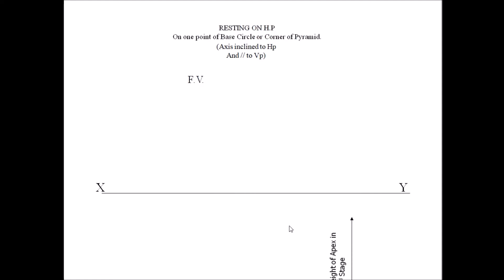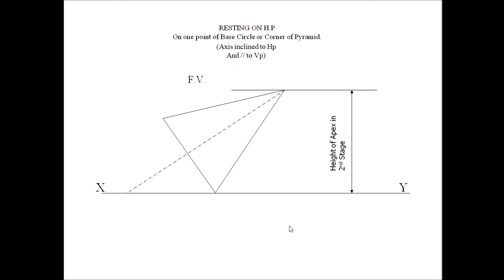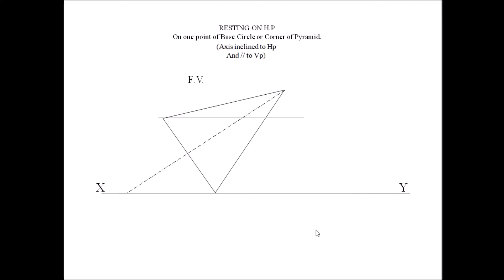Sometimes data will be given such that the apex is tilted and has a height — one particular height is given with respect to XY. In that case, we will first draw a horizontal line parallel to XY with the given height, and then go for this with respect to this constraint. Sometimes the height of the opposite corner or opposite point is given; in that case, we first draw a construction line parallel to the XY line, fix it with respect to whatever height is given, and then draw.